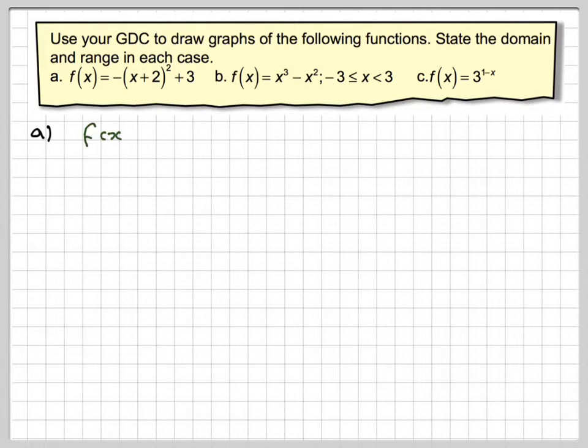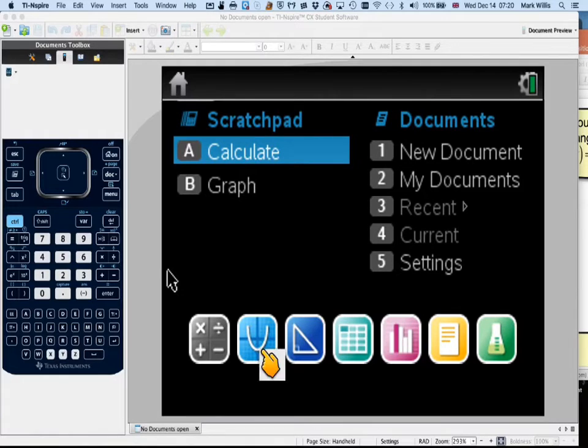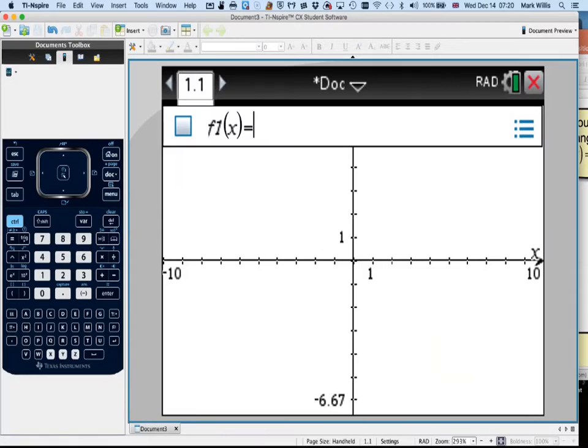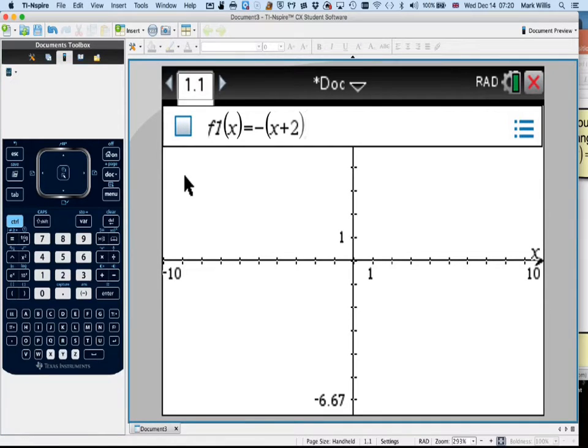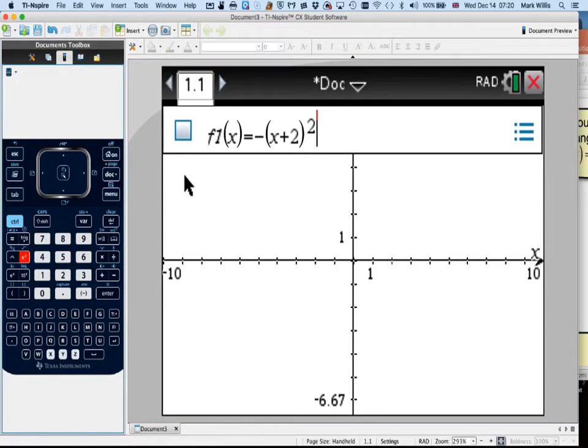So, do one by one. The first one here is f(x) is equal to minus brackets (x + 2) all squared plus 3. Let's go to our GDC. Select a graphing mode. And we will now graph the function. So it's minus brackets (x + 2)² + 3.